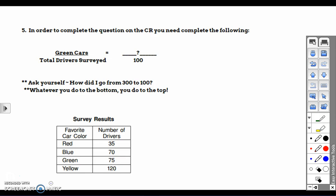And the total drivers must be 300 because she says ask yourself how do you go from 300 to 100. So the total drivers surveyed are 300. And then she's got to go from 300 to 100. Then she says whatever you do to the bottom, you do to the top. Whatever you do there, you take your green cars, do the same to that number, and you'll find out the percent that prefer green cars.